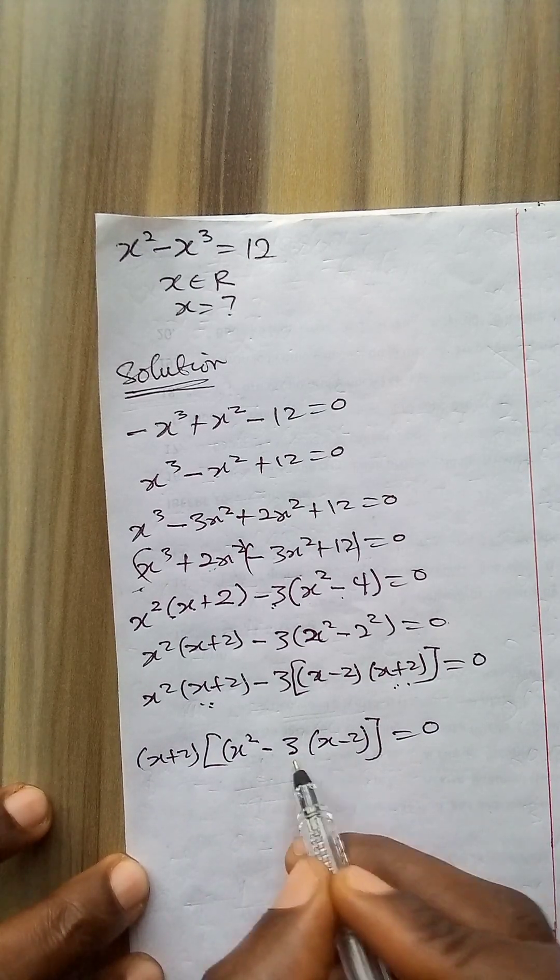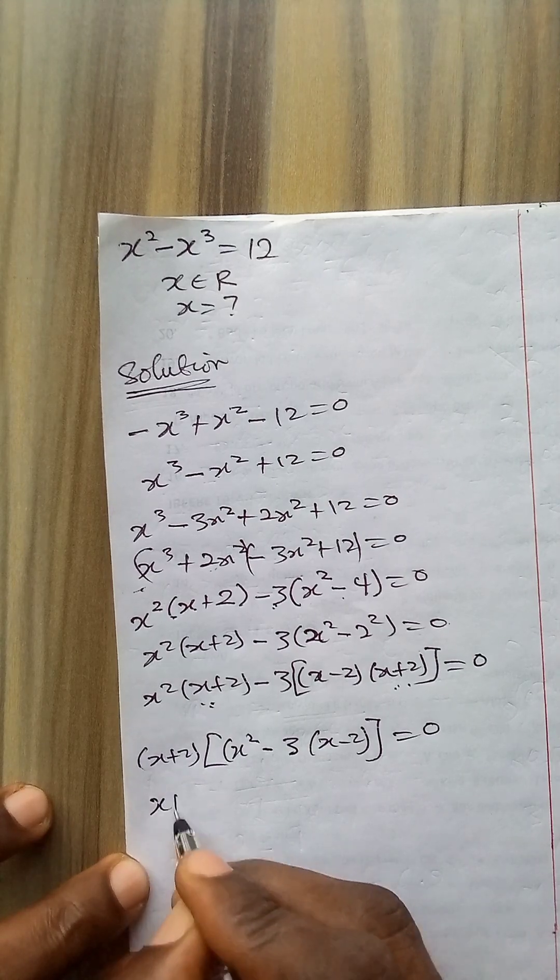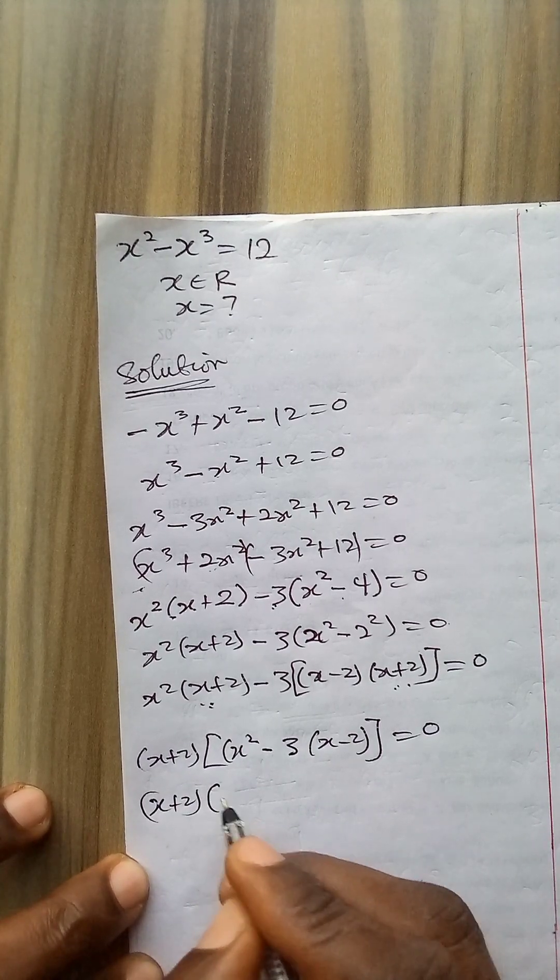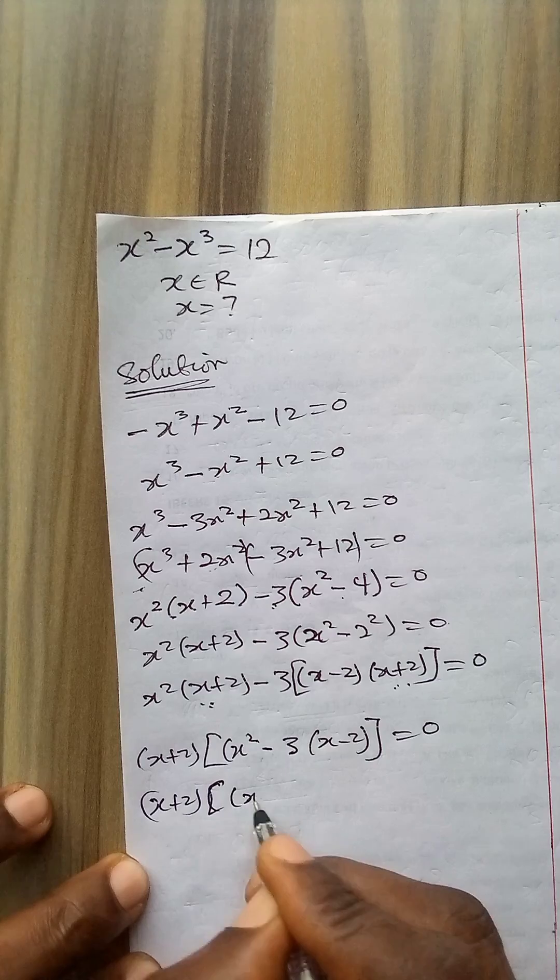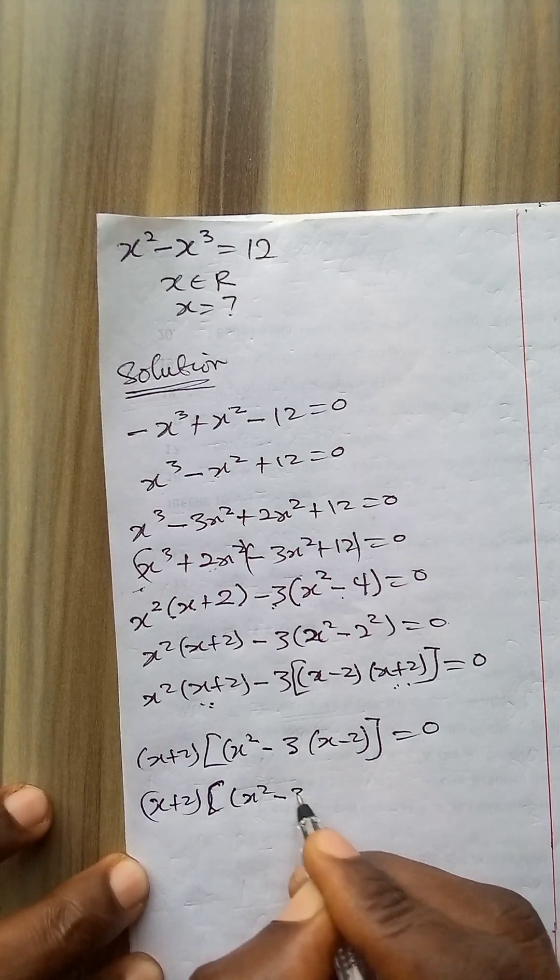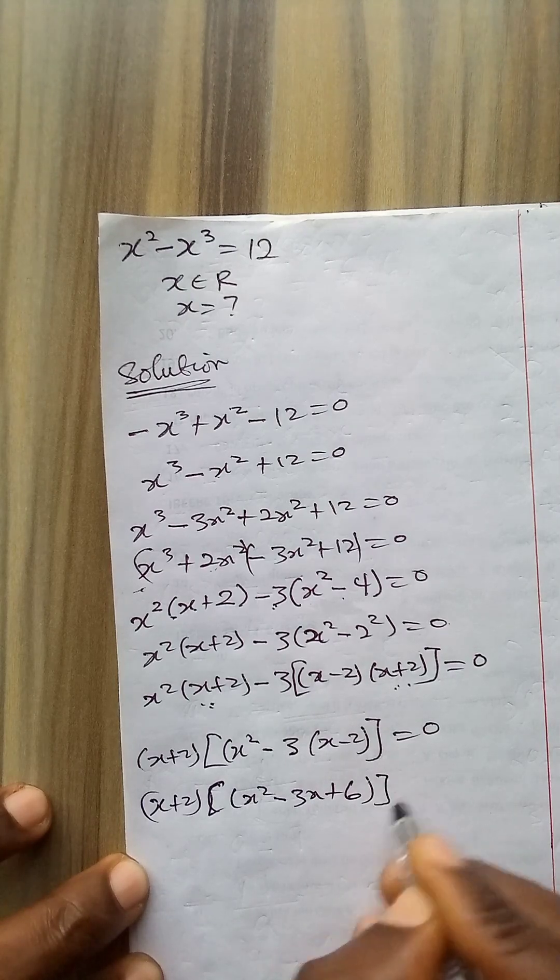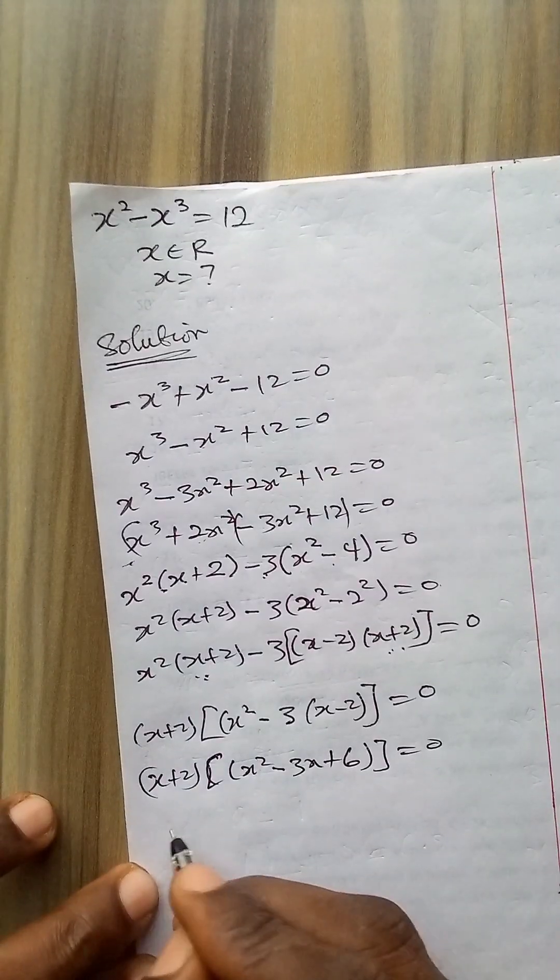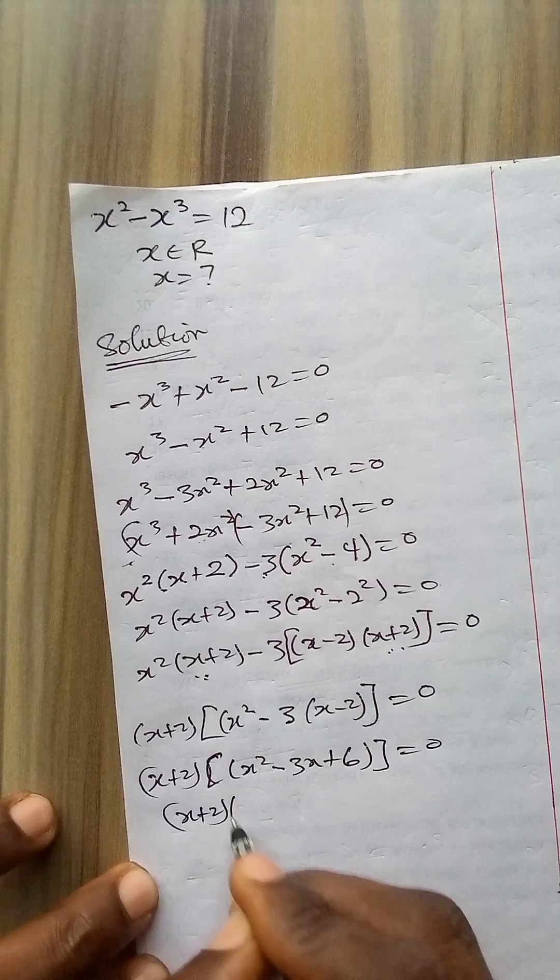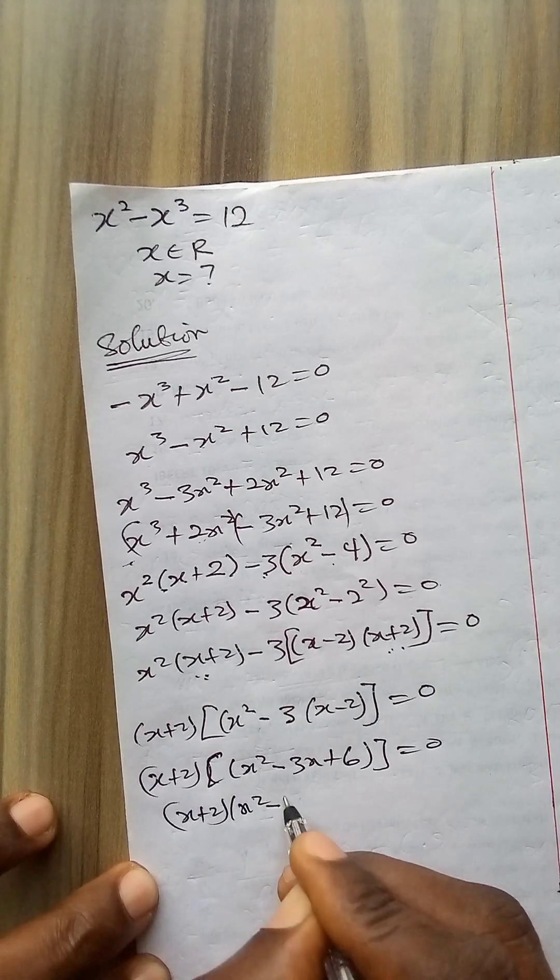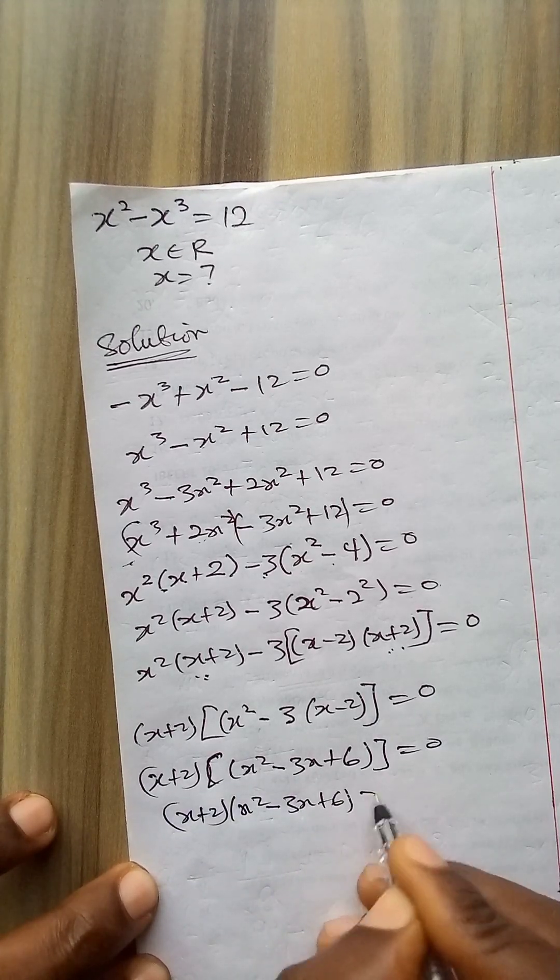Now let me open this bracket. So I have x plus 2 here. Then x squared minus 3x plus 6 will give me 0. That becomes (x plus 2)(x squared minus 3x plus 6) equals 0.